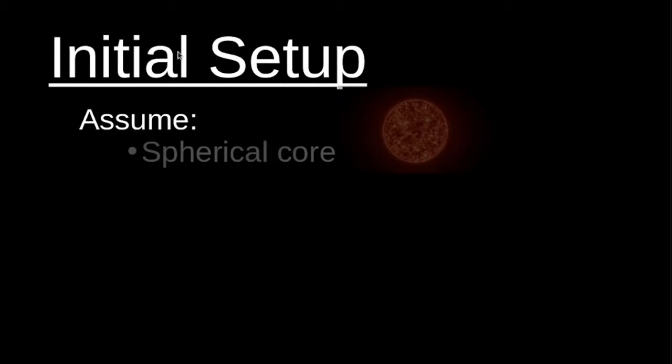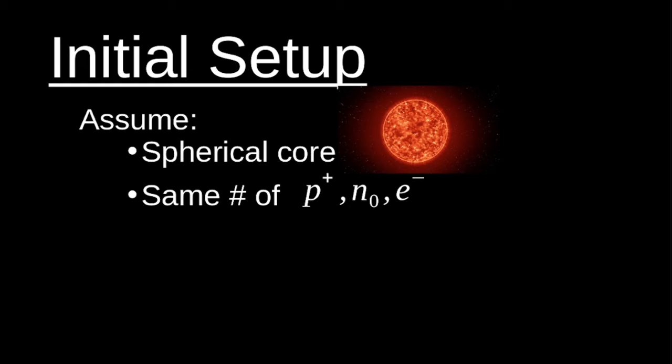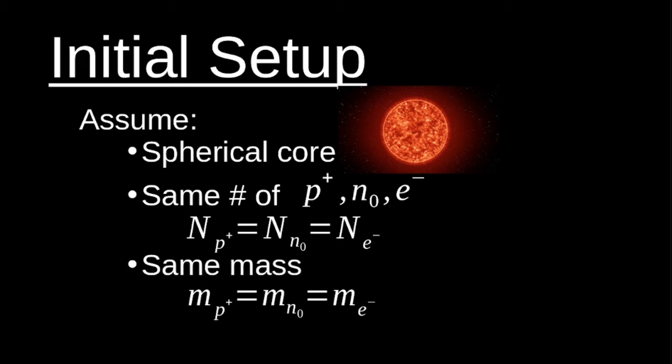The important question is: how many more neutrons are there than protons or electrons? Notice I'm changing notation to n-naught — you'll see why in a moment. Warning: the physics is about to start. I'm going to be doing algebra, so don't worry, it's just algebra. Let's go through our initial setup and make the following assumptions: first, we assume a spherical core; second, we assume the same number of protons, neutrons, and electrons.